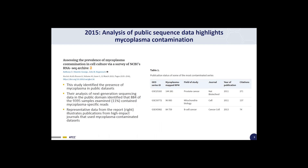Fast forward to 2015 — the advancement of new technology, such as next-generation sequencing, allows us to survey mycoplasma contamination from cell culture in novel ways. A recent study published in Nucleic Acids Research assessed the prevalence of mycoplasma contamination in cell culture by surveying NCBI's RNA-Seq archive. High-throughput RNA sequencing data is growing at an exponential rate. The authors predicted that mycoplasma sequences in RNA-Seq data from primate and rodent specimens would be indicative of contamination. Their analysis identified that 884 of 9,395 samples examined — or 11% — contained mycoplasma-specific reads.